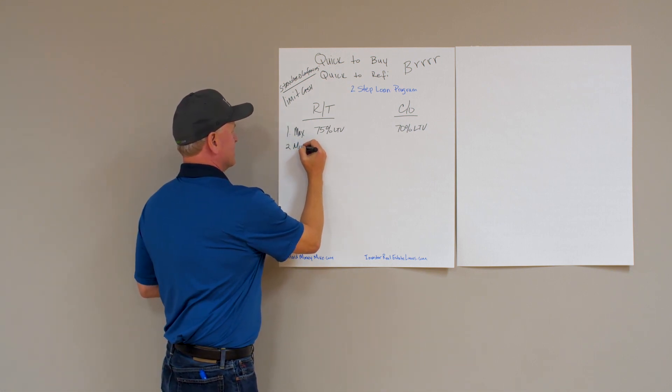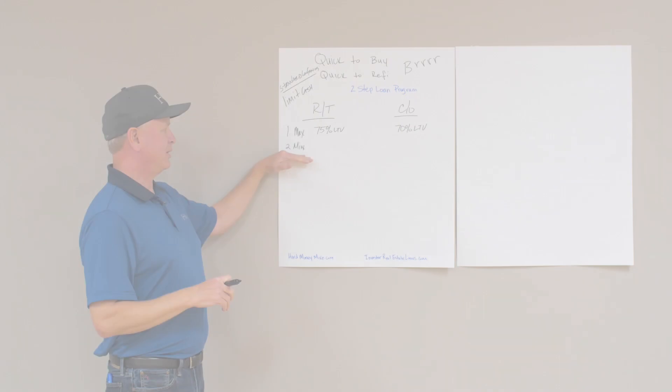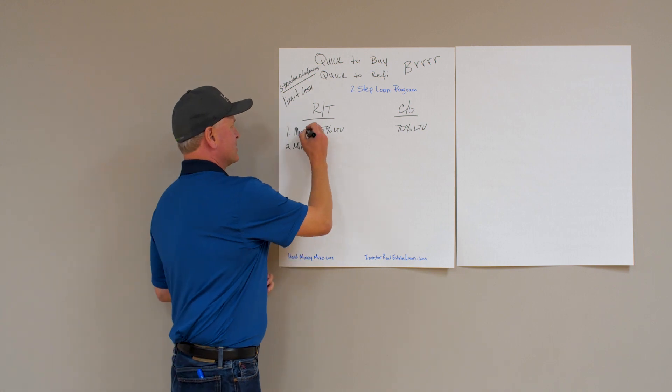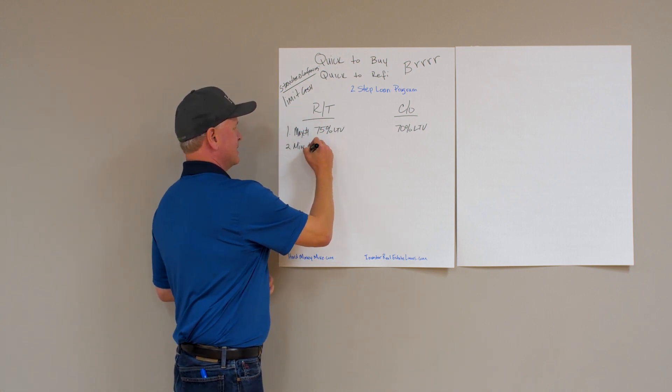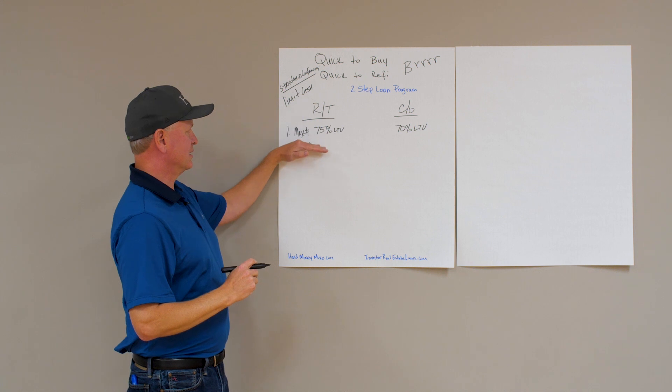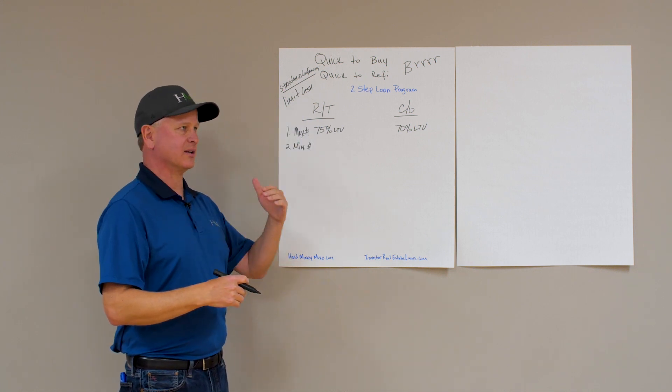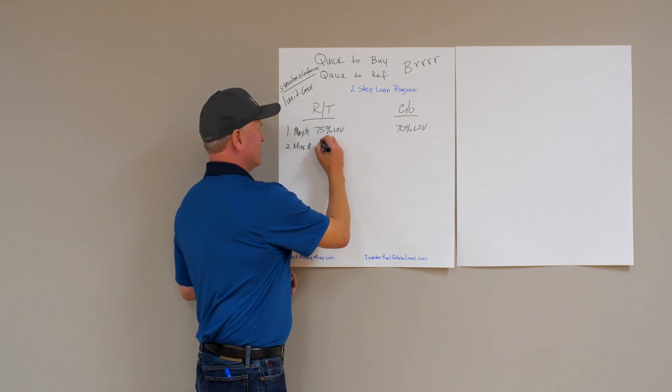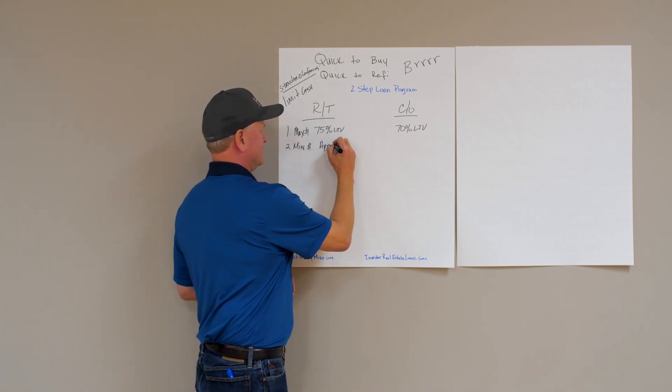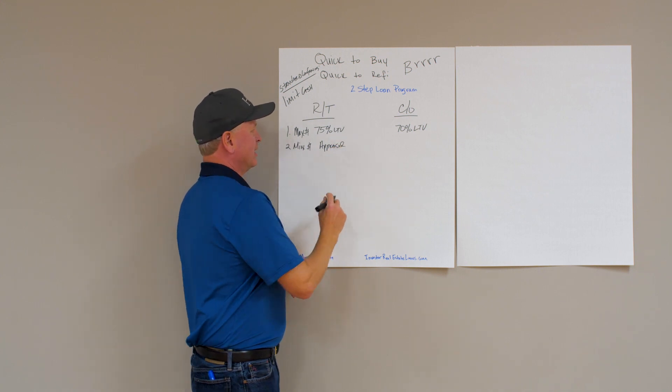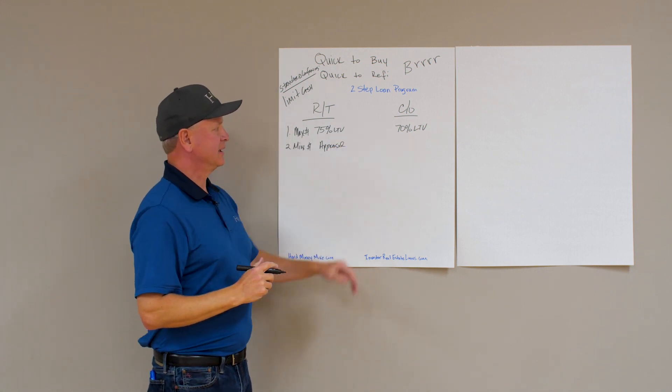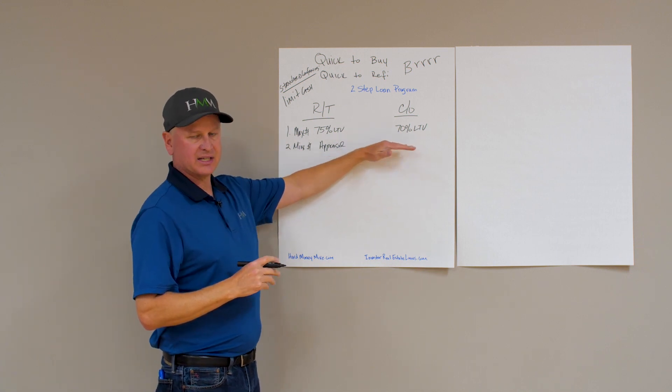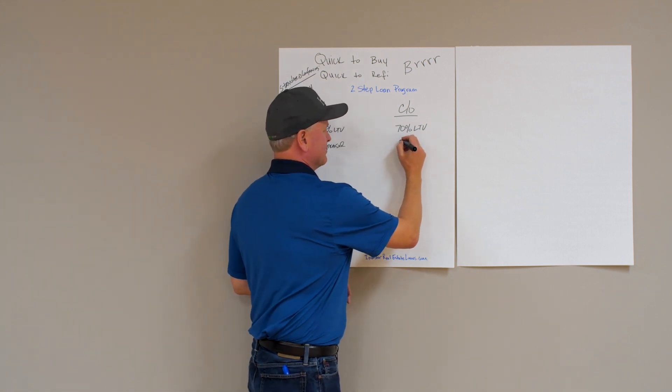Number two, we want to minimize our cash flow, and part of that minimizing is how long we have that short-term loan. On a rate and term, as long as your project is complete and you've done all the work, we could use the appraisal. You could do this at any time. On the cash out, if you want to use the appraised value to get your loan for the cash out, you have to wait six months.